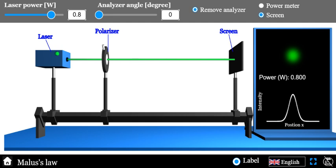In this setup, we will help you to visualize Malus's Law. As you can see, a light beam is emerging from the laser source, passing through the polarizer and falling on the screen.